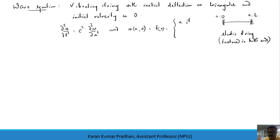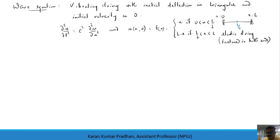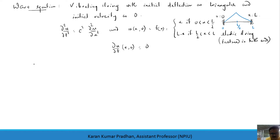The triangular initial deflection is: f(x) = x for x in [0, L/2], and f(x) = L − x for x in [L/2, L]. This is a piecewise continuous function — linear with positive slope up to L/2, then decreasing. The initial velocity condition is ∂u/∂t = 0 at t = 0, and the boundary conditions are known.